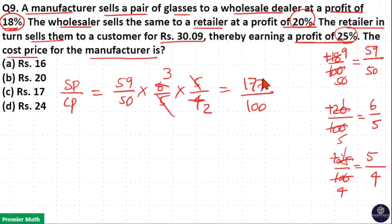Now you can see this 177 part is the sell price and here sell price is given as rupees 30.09. So this 177 part is 30.09. Then we need to find out the cost price that is 100 part. Here you can see in the answer there is no decimal point.